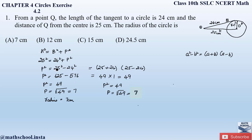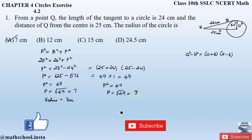Our correct option is option A — the radius of the circle is 7 centimeters. This is how we solve question number one. If you have any doubts, comment below. In my next video I will solve question number 2 from exercise 4.2. Do like and subscribe, and watch the related videos of chapter 4, Circles, shown on screen. Thank you.